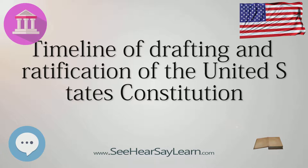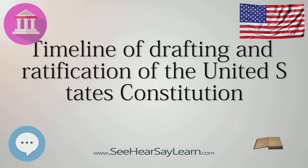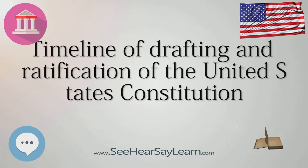1787. January 6: North Carolina elects delegates to the proposed constitutional convention. William Blount, William Davey, Alexander Martin, Richard Dobbs Spaight, and Hugh Williamson will attend.